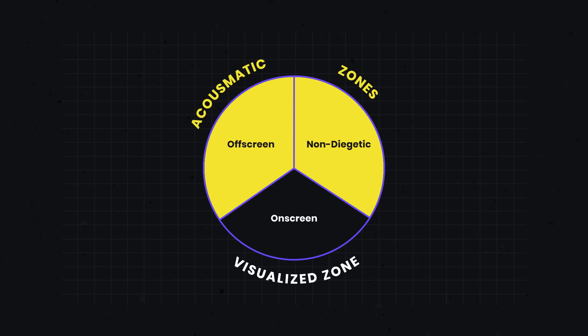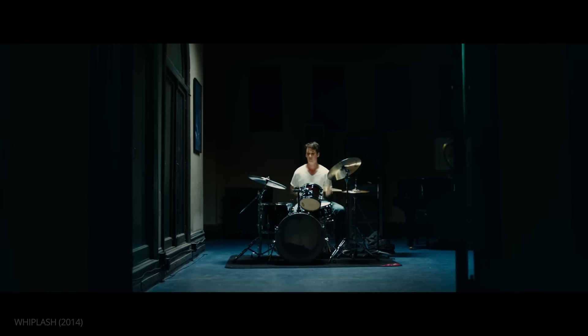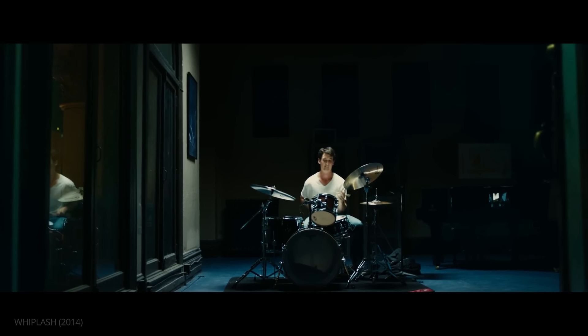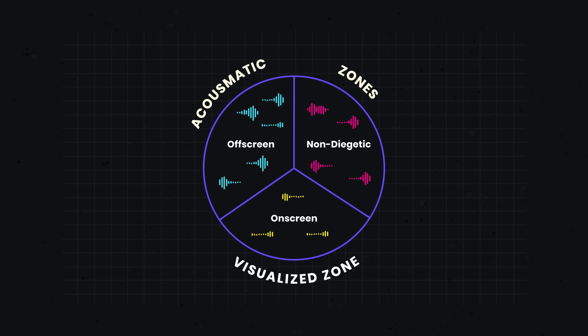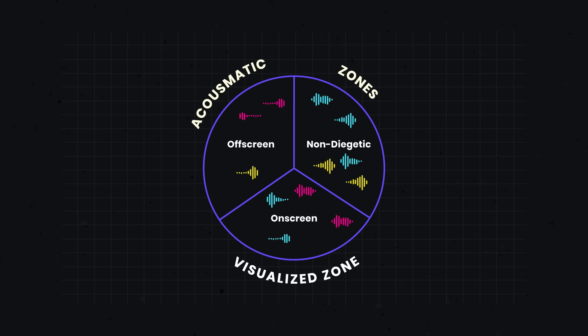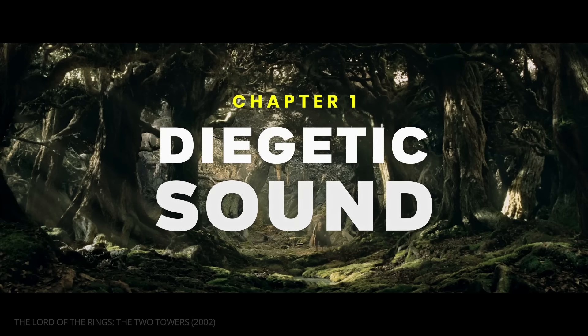The final category covers the visualized zone, where the source of the sound is visible on screen. All sound falls into one of these categories, and some can even switch zones, as we'll see in a minute. So let's look at some examples of each and how they work, starting with diegetic sound.